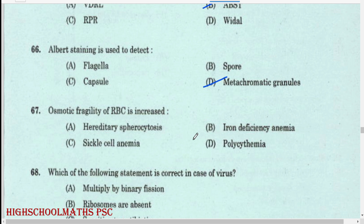Osmotic fragility of RBC is increased in: hereditary spherocytosis.